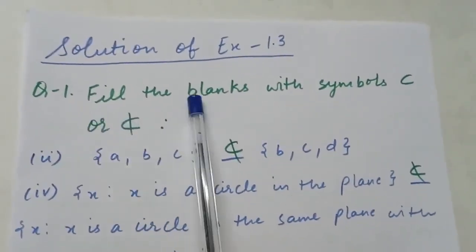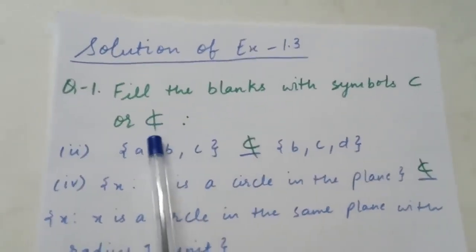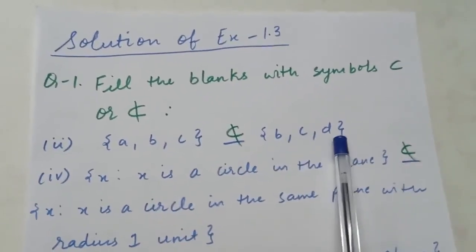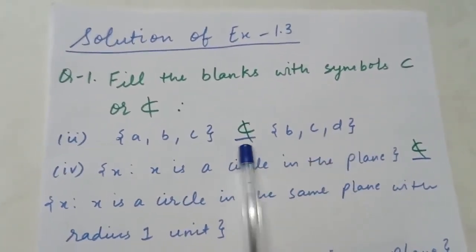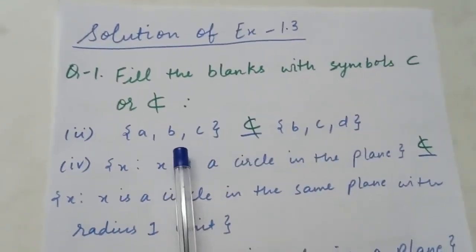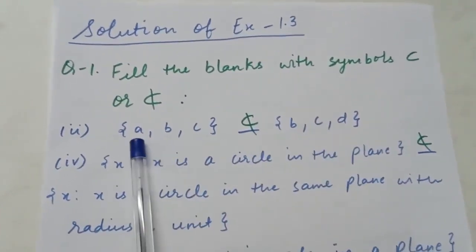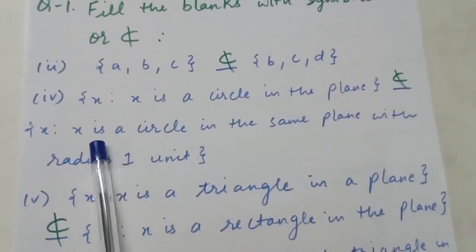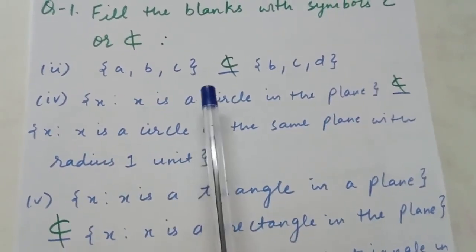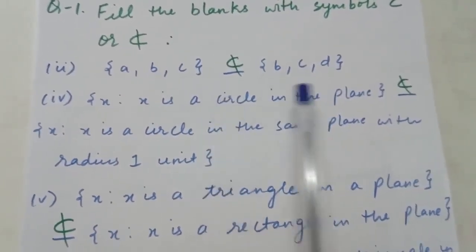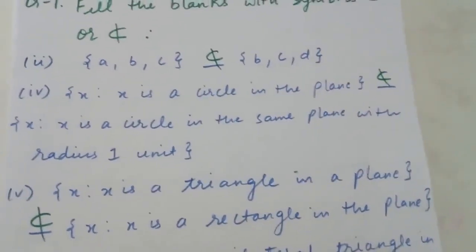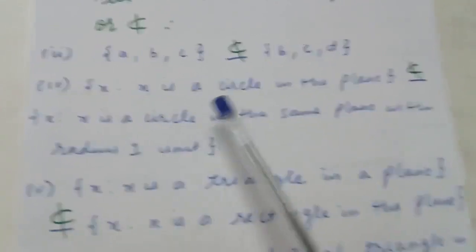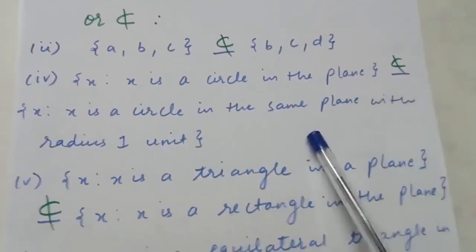Exercise 1.3, Question 1: fill in the blanks with ⊂ or ⊄. First: {a, b, c} and {b, c, d} — {a, b, c} is not a subset of {b, c, d} because element a belongs to the first set but not the second. Second: {x : x is a circle in the plane} and {x : x is a circle in the same plane with radius 1} — the first set contains circles of any radius, so it is not a subset of the second.